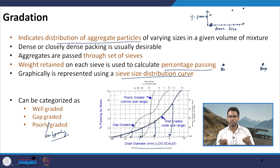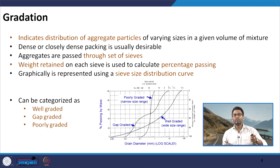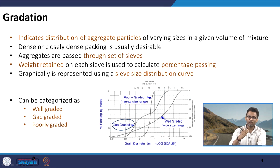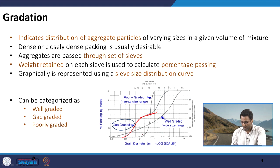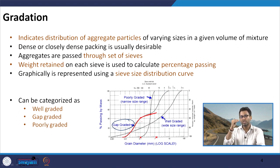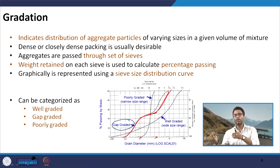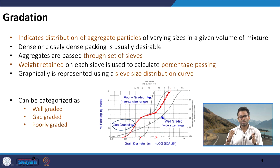Well graded structures generally achieve the dense packing discussed earlier. In a gap graded structure, some sizes are missing — you have finer and coarser aggregates but the mid-size range is absent. On the gradation curve this appears as a flat section where the percentage passing does not change over a range of sieve sizes, then the curve resumes, indicating a gap in the structure.